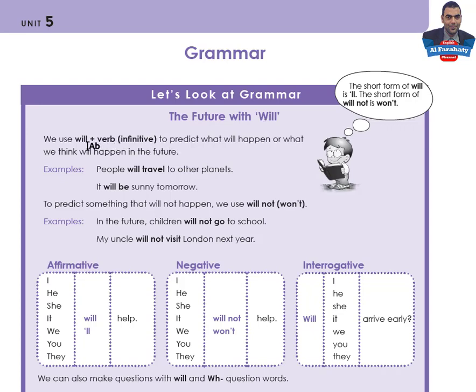We use 'will' plus a verb in the infinitive form in order to predict what will happen, or what we think will happen, in the future. That is the use of this tense. There is only one use here, but you can also use it to make promises, threats, and so on — you will study those later. So the form is: will + verb in the infinitive. Let's look at some examples.